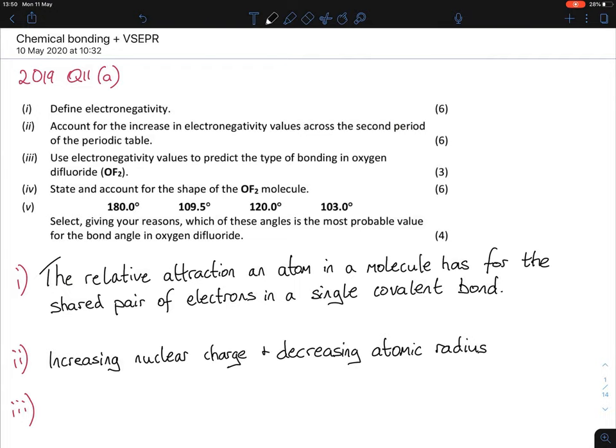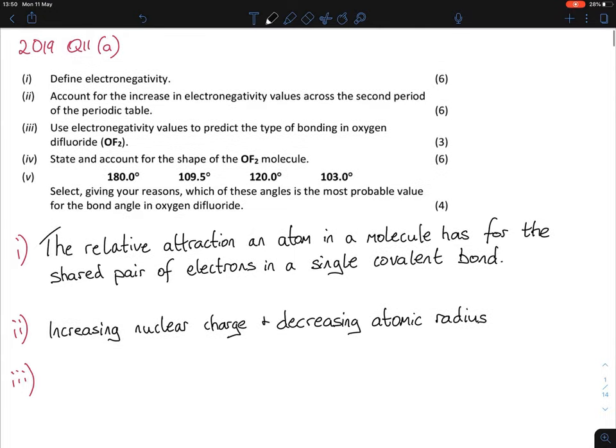Now starting off, the most common definition in chemistry for leaving cert is to define electronegativity. So this is the relative attraction an atom in a molecule has for the shared pair of electrons in a single covalent bond. You must get that word-by-word perfect. Electronegativity really is at the heart of this chapter, so you have to know it. So, so important.